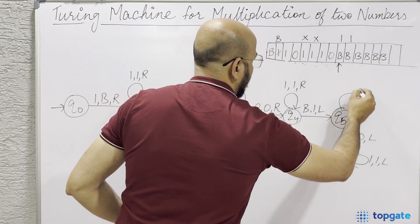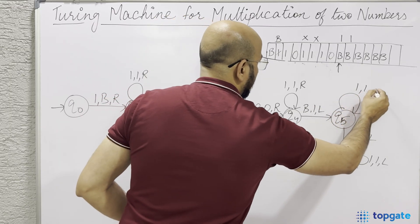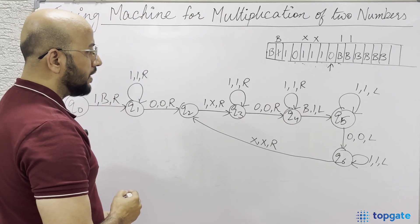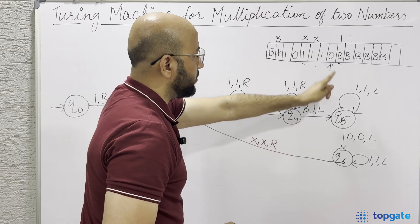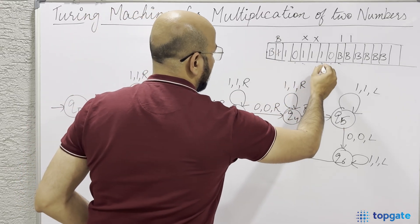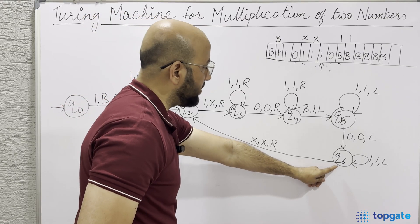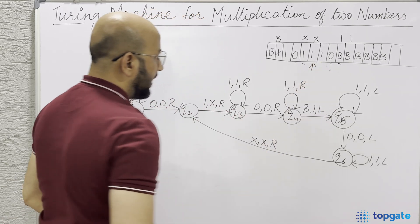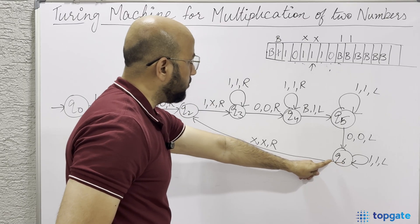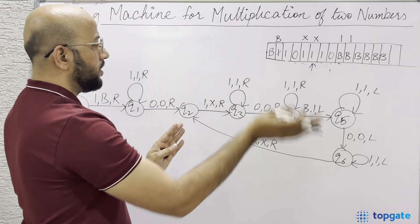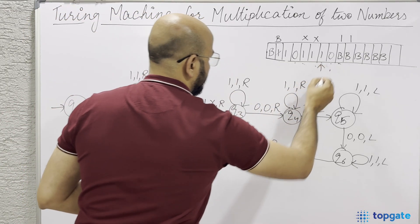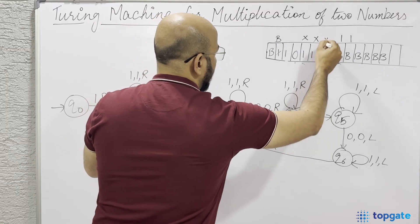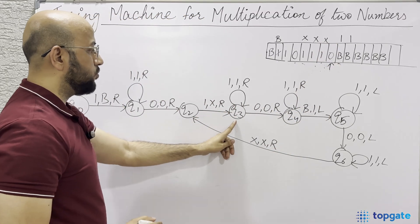At Q5, take a self loop: if you find a 1, keep it as 1 and go left. This 1 is skipped and the pointer points to the 0. At Q5, machine knows 0 should be skipped, so this 0 is skipped and the pointer comes to the 1, reaching state Q6. At Q6, machine skips this 1 and the pointer now points to the X, still at Q6. It says XXR - X stays X, go right - and the pointer reaches the next 1, back to Q2.